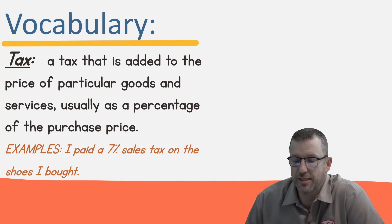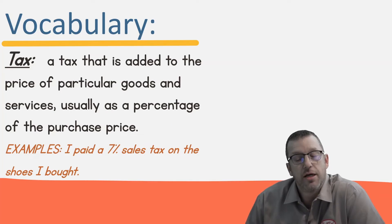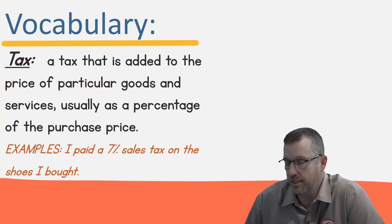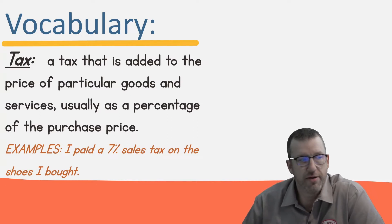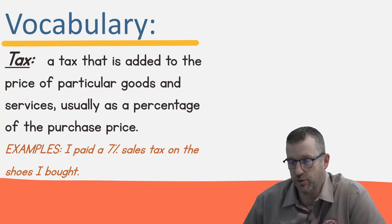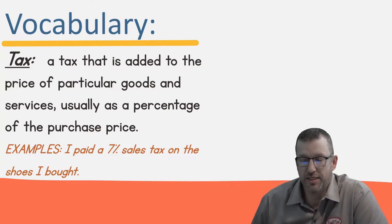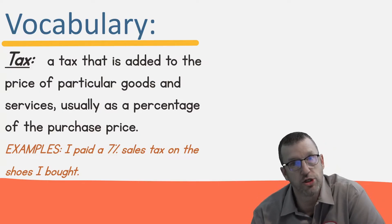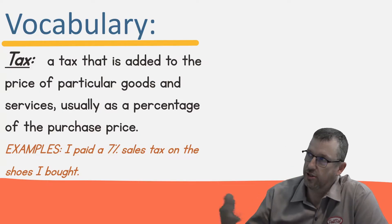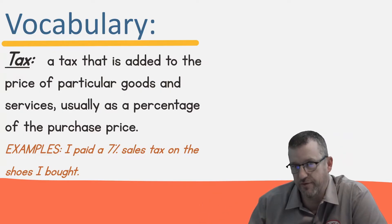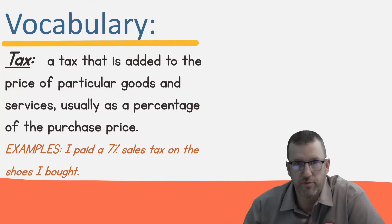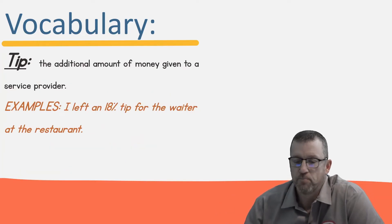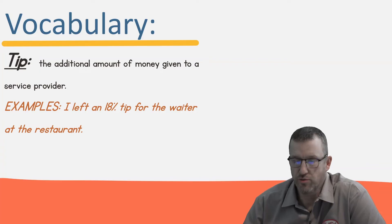Tax is something that is added to the price of particular goods and services, usually as a percentage of the purchase price. A lot of times a government adds taxes to things that we purchase, and those help pay for goods and services. For example, I paid seven percent sales tax on the shoes I bought — the shoes on the wall said $55, but at the register you paid $63 because of the sales tax added on top.